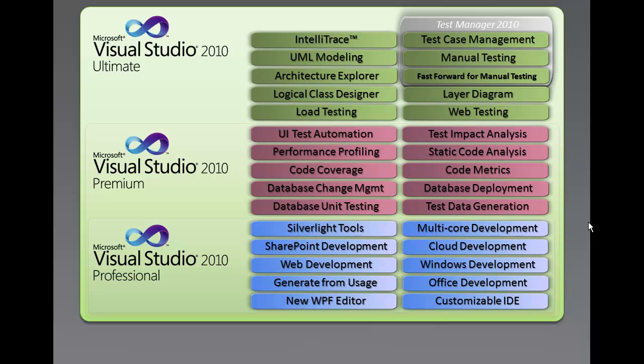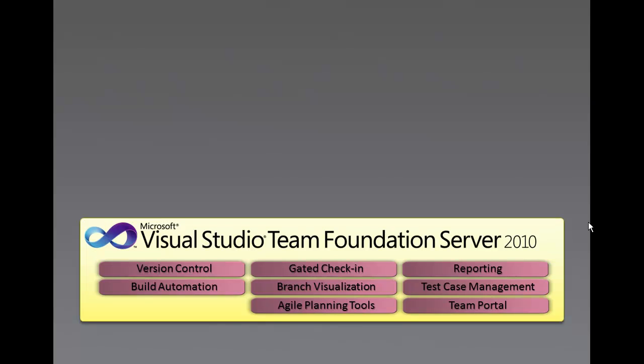Additionally, the new architecture and modeling tools are included in Ultimate, including support for authoring UML diagrams — like Activity Diagram, Use Case Diagram, Sequence Diagram, Component Diagram, and Class Diagrams. There are also some additional products in the Visual Studio 2010 family.